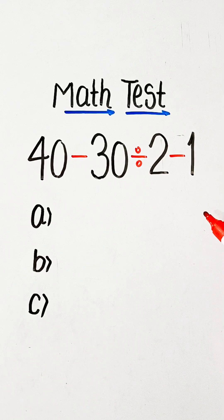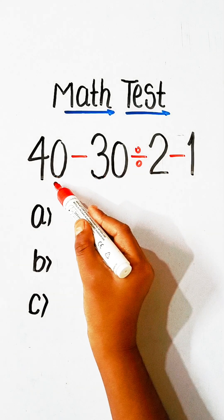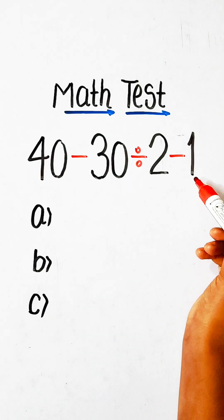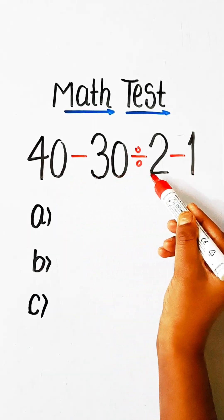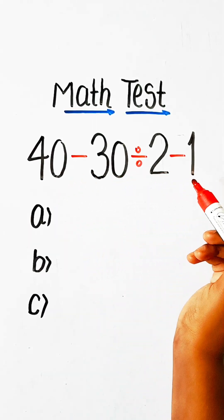Hello everyone, in this video we will try to solve this math expression: 40 minus 30 divided by 2 minus 1 equals what?